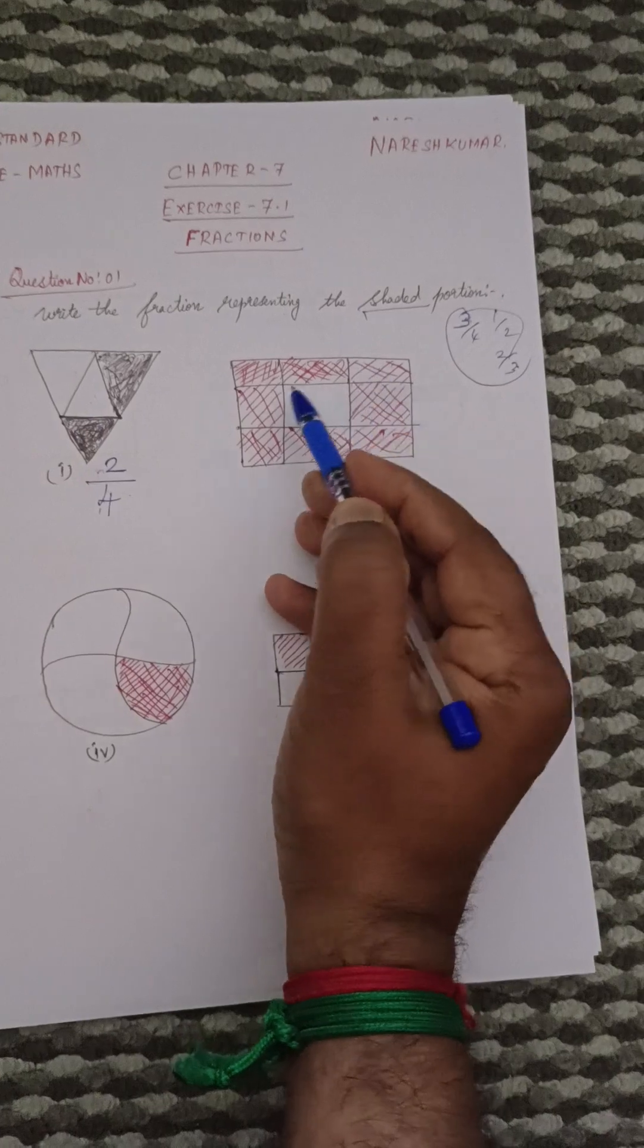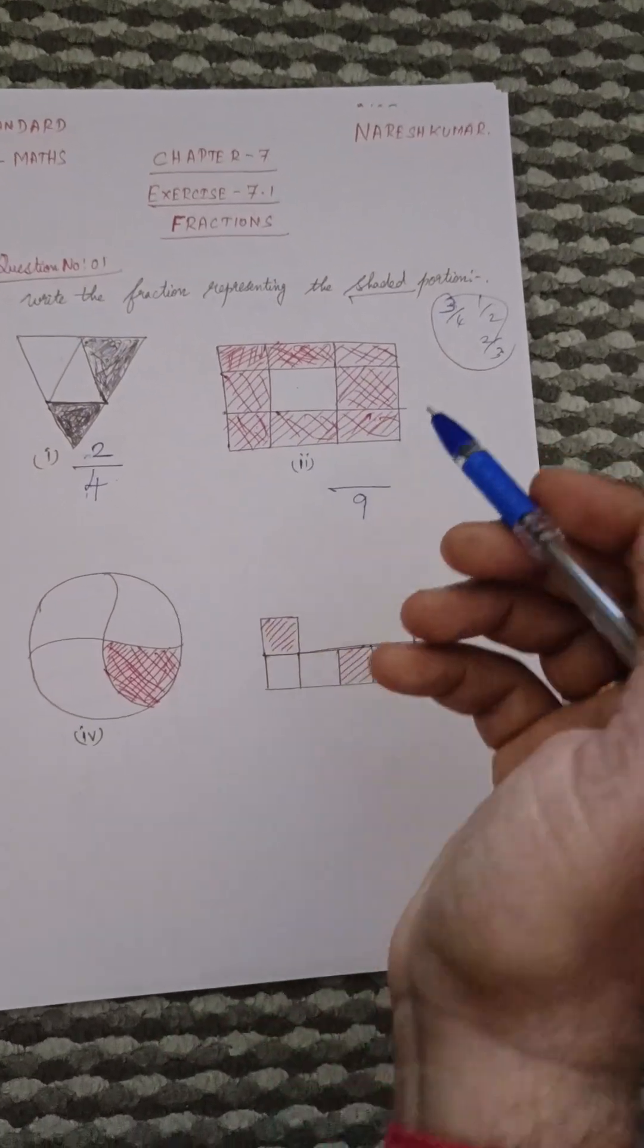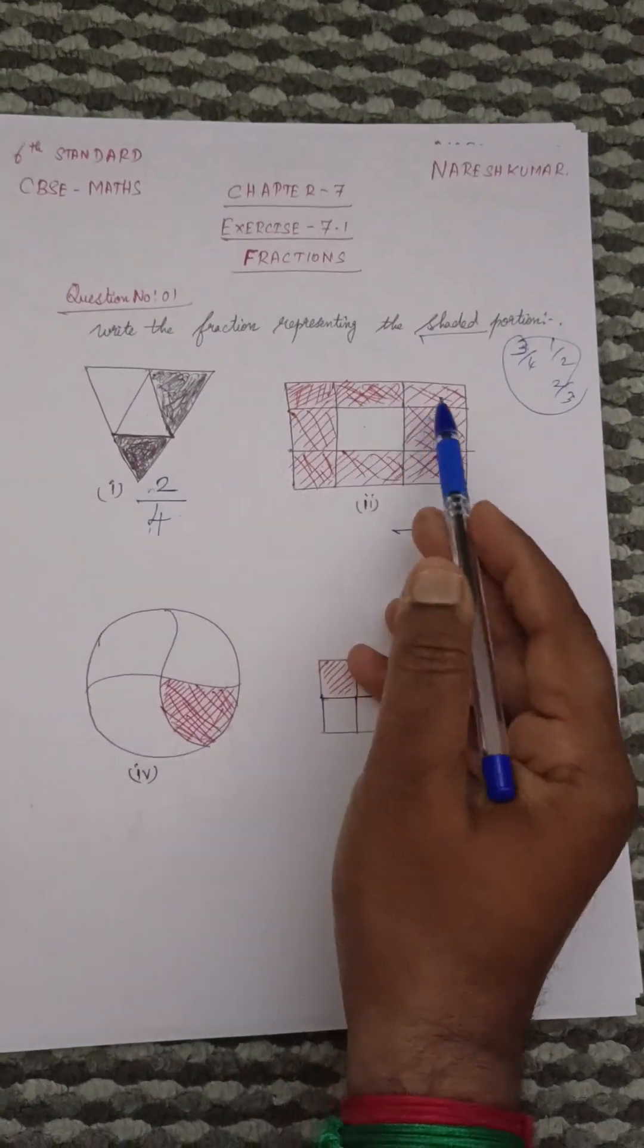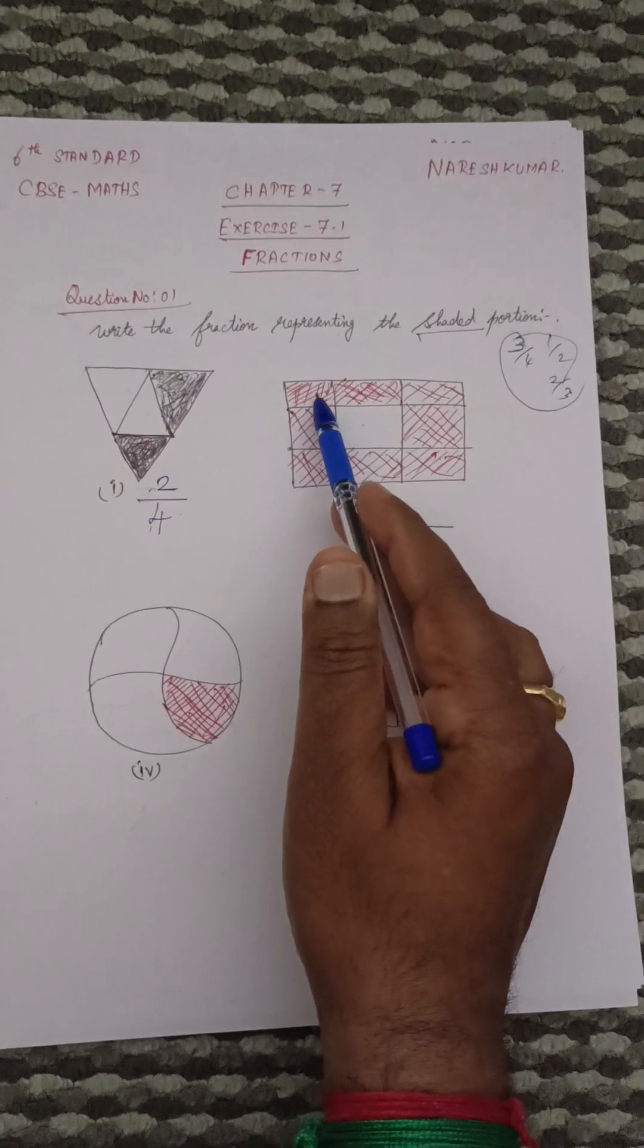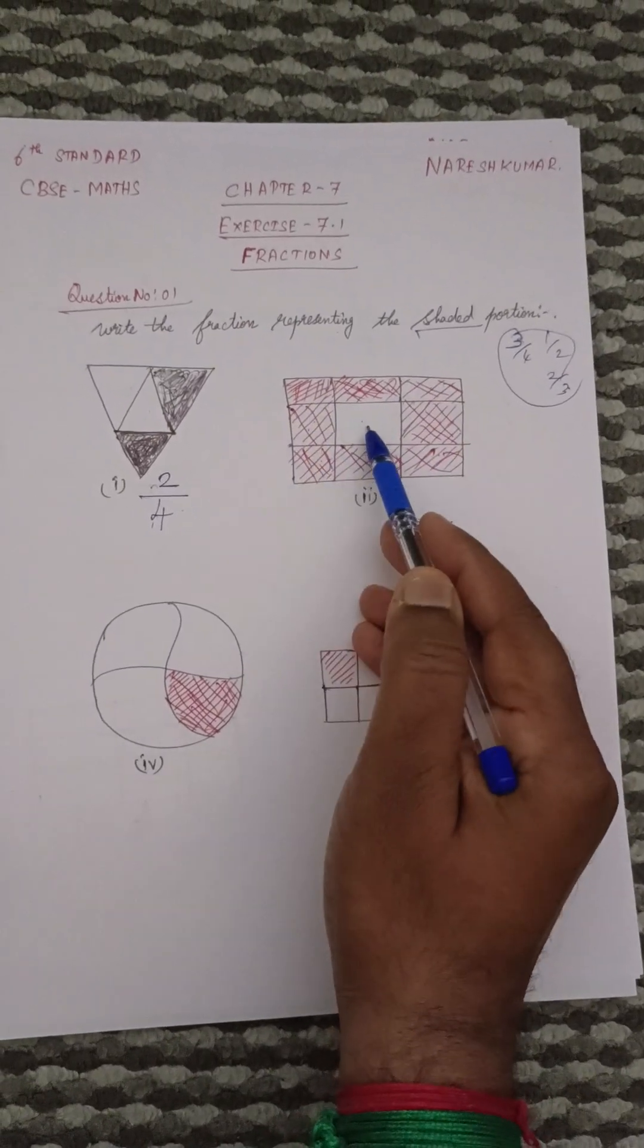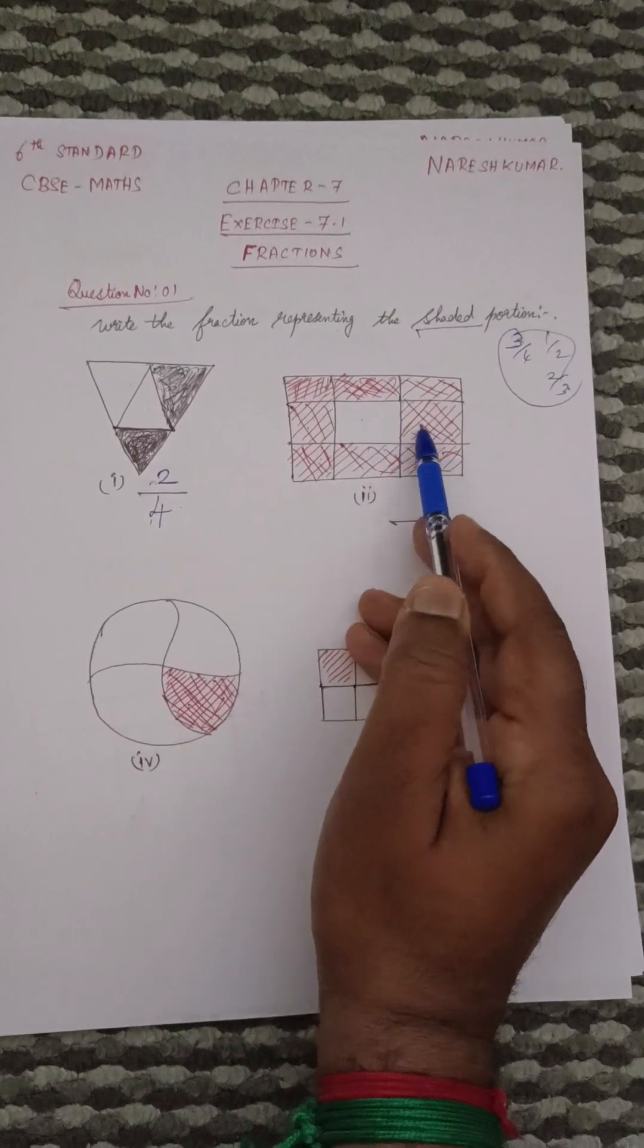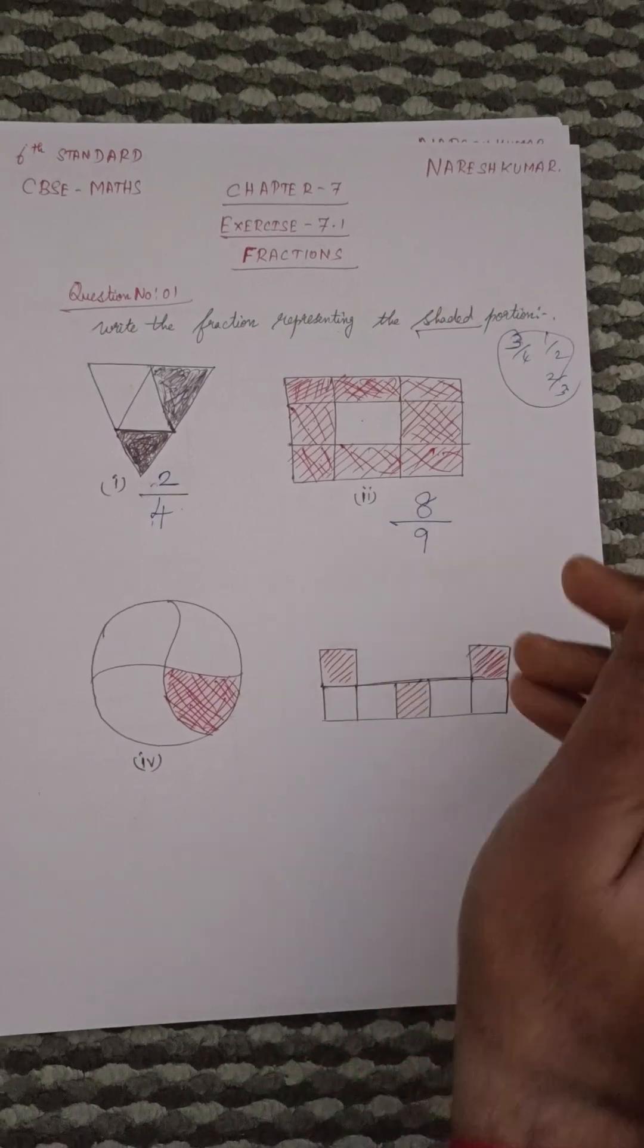1, 2, 3, 4, 5, 6, 7, 8, 9. So in this, how many things have been shaded? 1, 2, 3, 4. This is not shaded, so don't count. 5, 6, 7, 8. So 8 by 9.